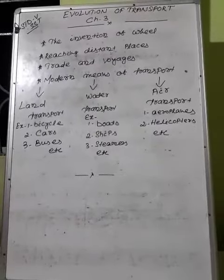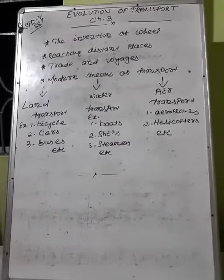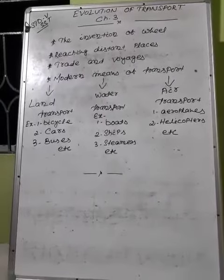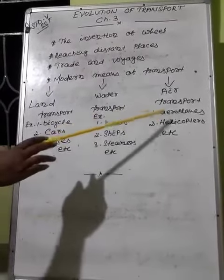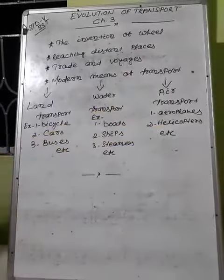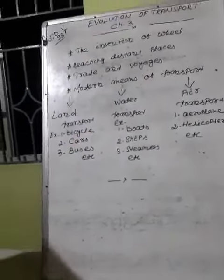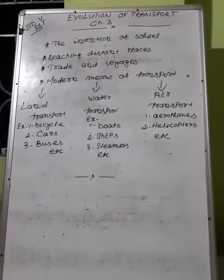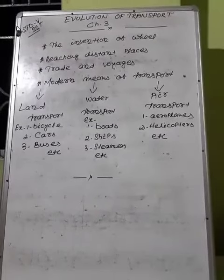Ships that carry goods are called cargo ships. Then the last one is air transport: aeroplanes, helicopters, etc. Air transport is the fastest and most expensive means of transport.